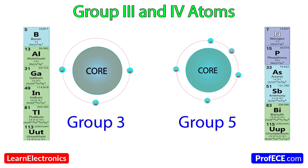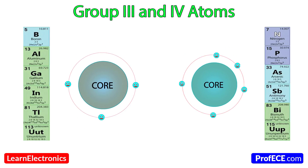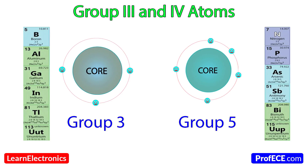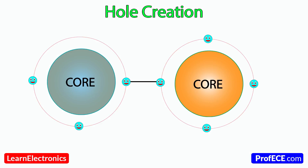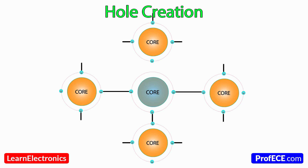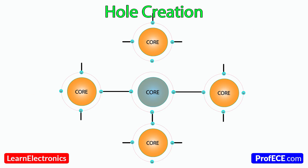Group 3 atoms contain 3 electrons in the outer orbit. Meanwhile, Group 5 atoms contain 5 electrons in the outer orbit. During the doping process, Group 3 atoms will start to bond with the silicon atom's outer electrons. Only 3 covalent bonds are possible to create for every silicon atom.